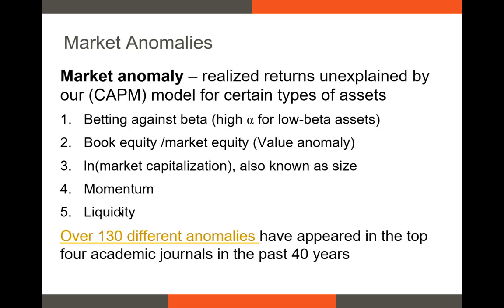That leads to market anomalies. As soon as the CAPM was developed, we started being able to identify different securities with different characteristics that would outperform or underperform what the CAPM predicted. A market anomaly is a case where we identify consistent realized returns that are unexplained by the CAPM or some other model.